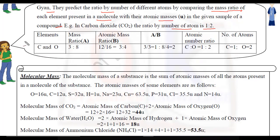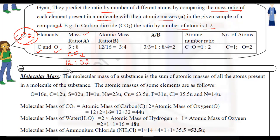For CO2: carbon's atomic mass is 12. Oxygen — 1 oxygen is 16 and 2 oxygens is 32. So the ratio is 12:32, which simplifies to 3:8. That is the mass ratio (A).